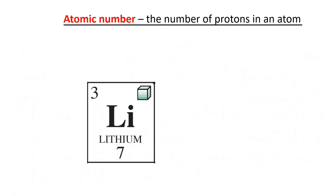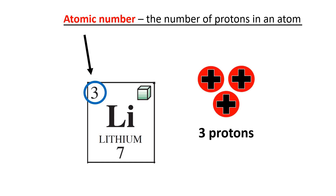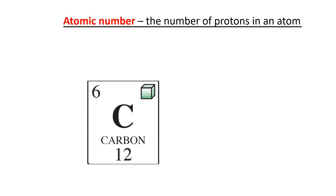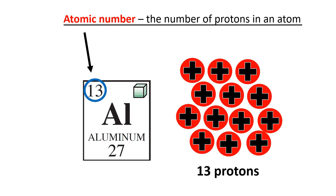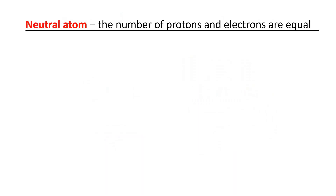So let's begin with the atomic number. An atomic number is the number of protons in an atom, which means the atomic number is equal to the number of protons. For example, lithium has an atomic number of 3, meaning lithium has 3 protons. Carbon has an atomic number of 6, meaning carbon has 6 protons. Aluminum has an atomic number of 13, meaning aluminum has 13 protons.